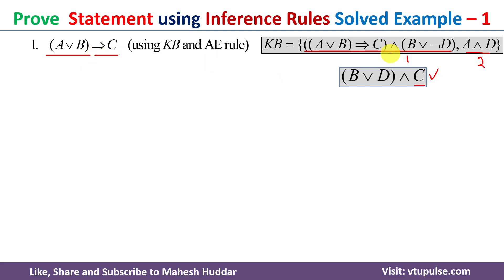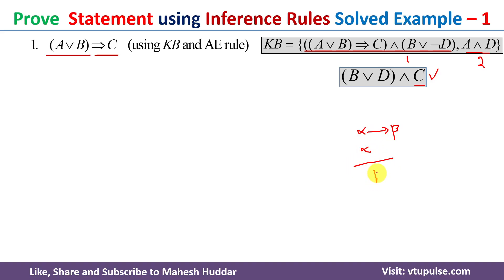So what I did is I considered the first knowledge base and eliminated the 'and'. Now, if I want to get C out of this statement, I have to use the modus ponens rule. To apply modus ponens, what is required is we need to have something like: alpha implies beta, and then alpha — then you will get beta.